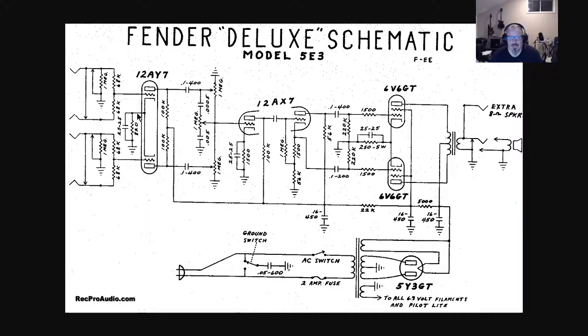But first of all, just quickly, this is the 5E3. It has the typical Fender dual inputs that go into a single one and they share a single 820 resistor with a 25 microfarad capacitor for the cathode dual 100k anodes.